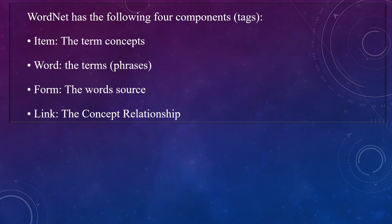WordNet has the following four components: Item — the term concepts; Word — the terms and phrases; Form — the word source; Link — the concept relationship.